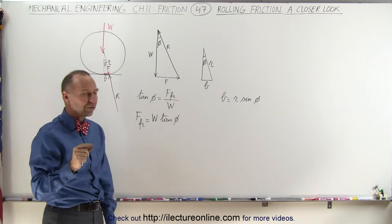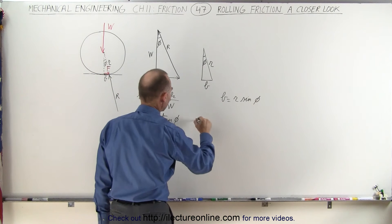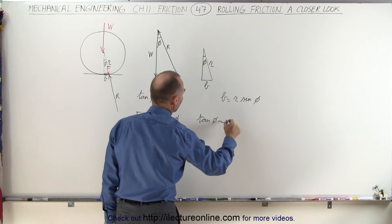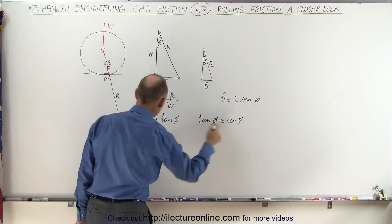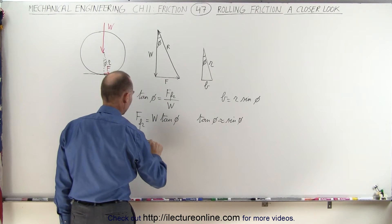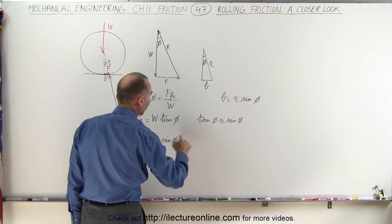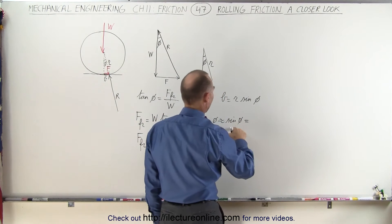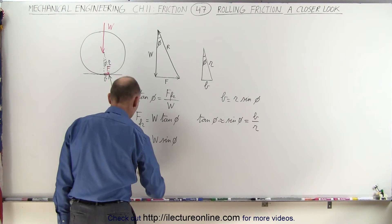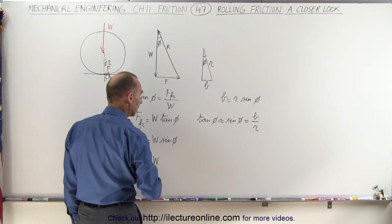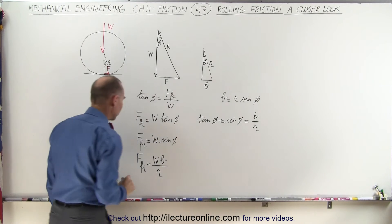We realize that these angles are always fairly small. Since the angles are small, the tangent of phi is very similar to the sine of phi. So we can replace the tangent with the sine, and say the friction force equals the weight times the sine of phi. The sine of phi can be defined as b over r. Therefore, the friction force equals the weight on the wheel times b — the coefficient of rolling friction — divided by r, the radius of the wheel.